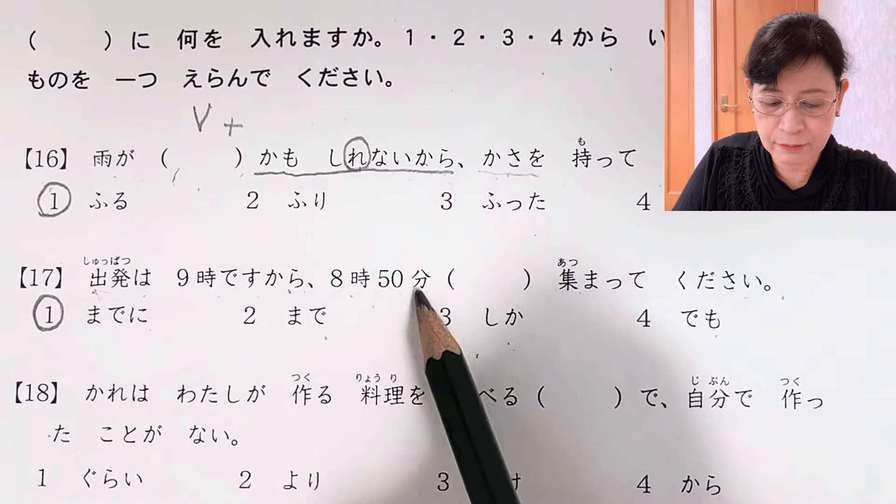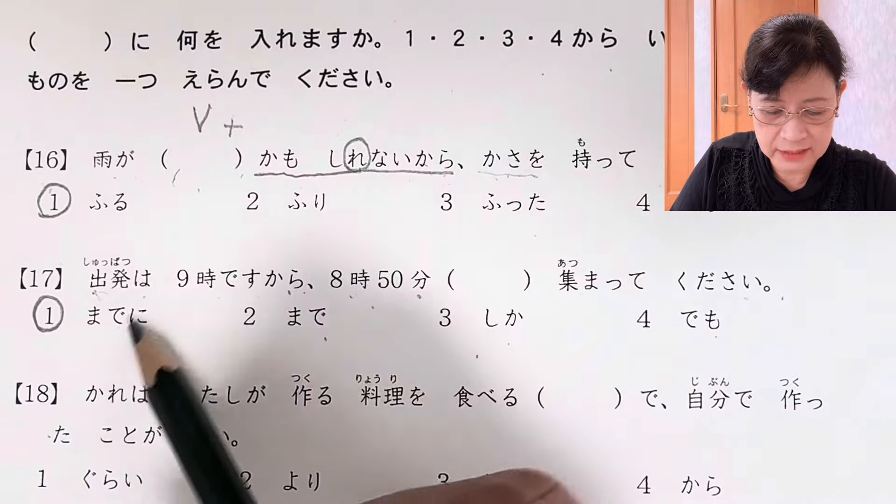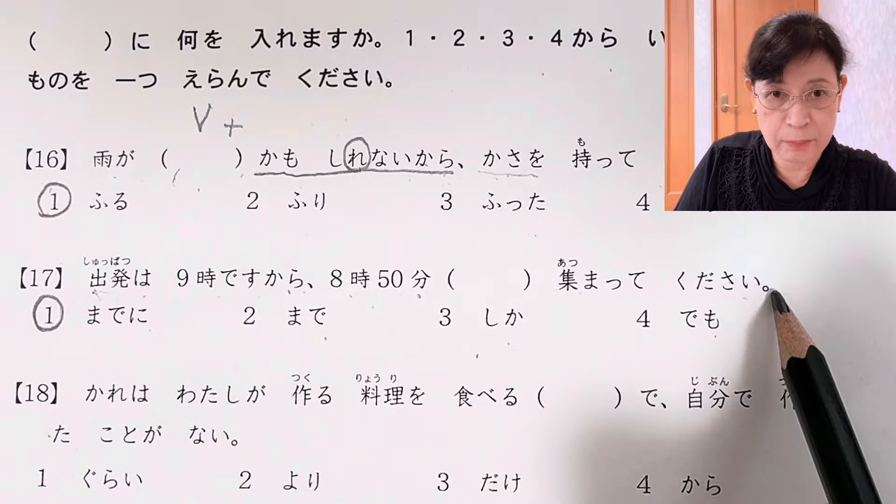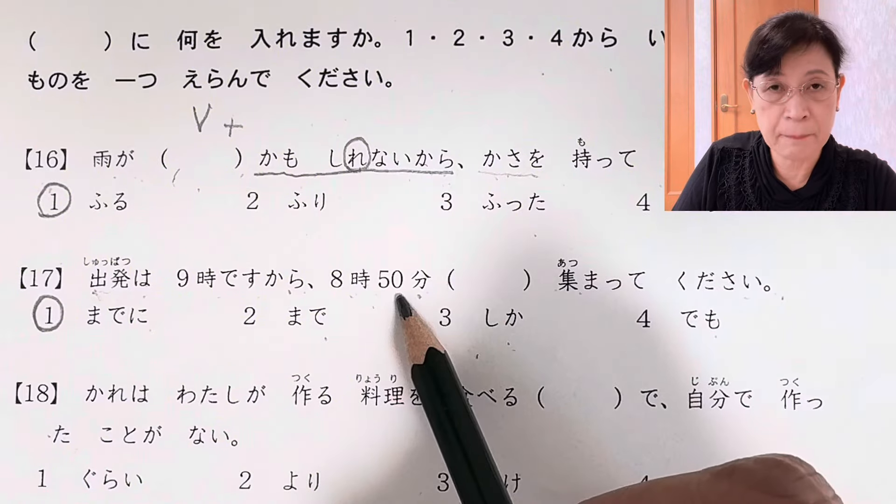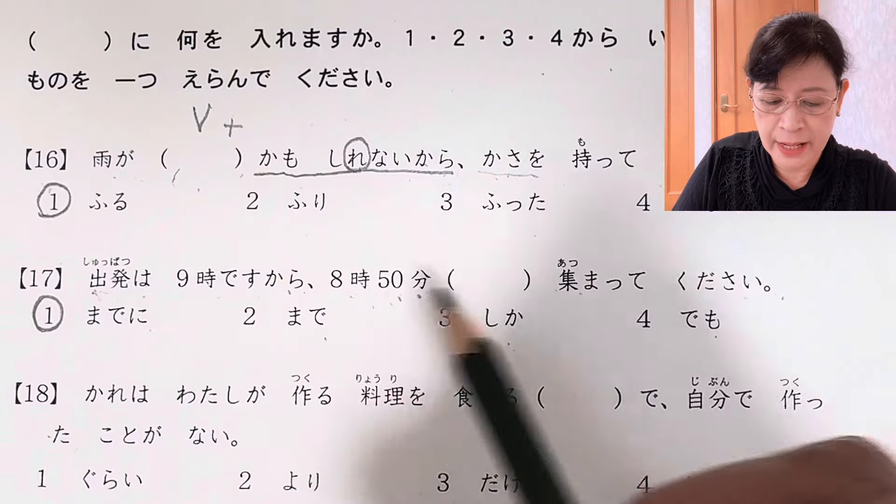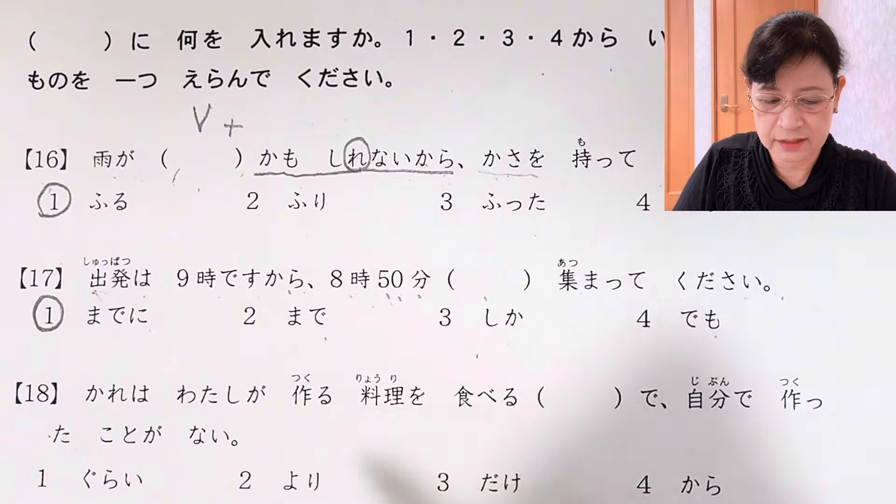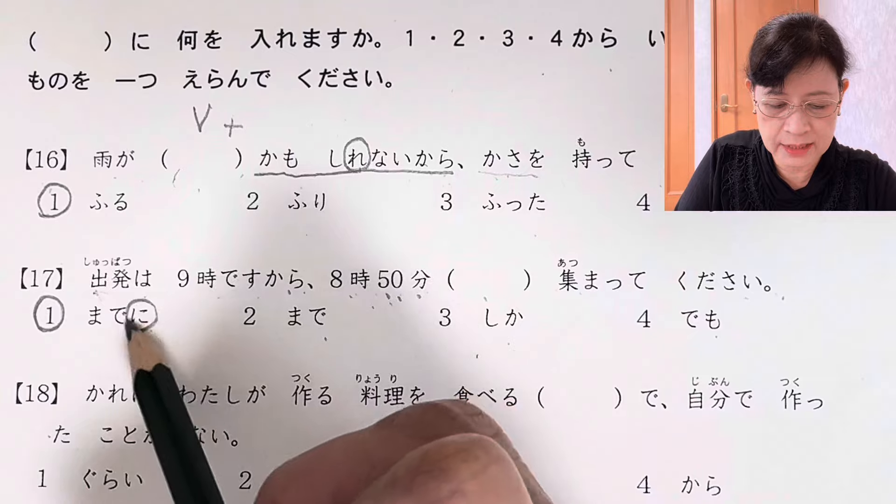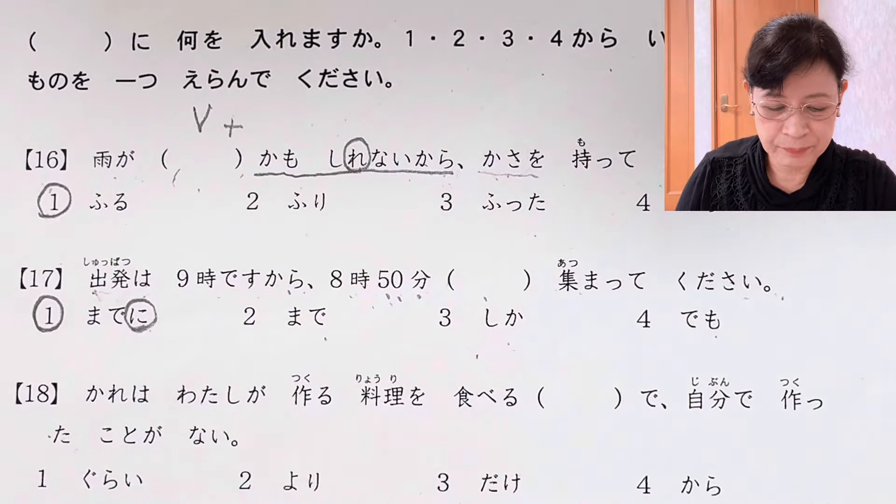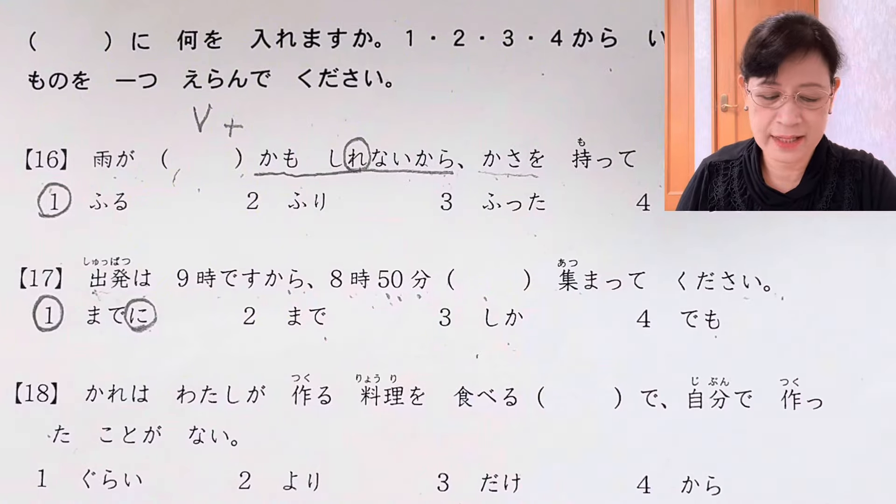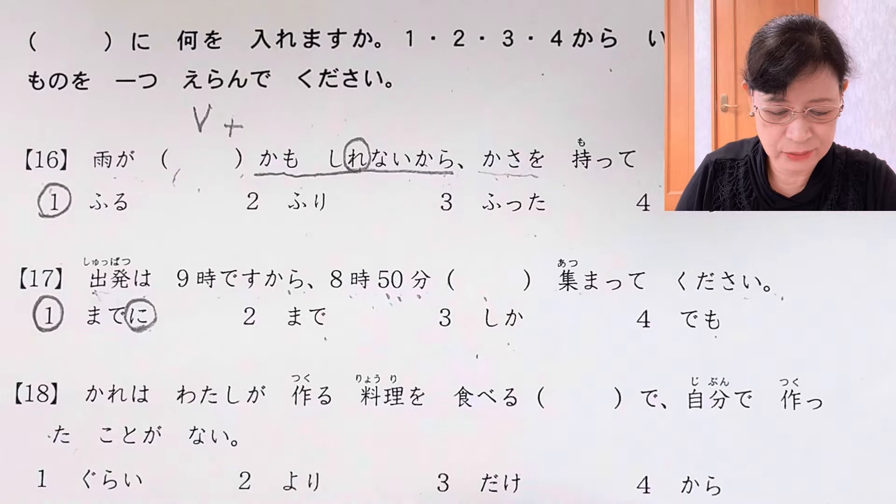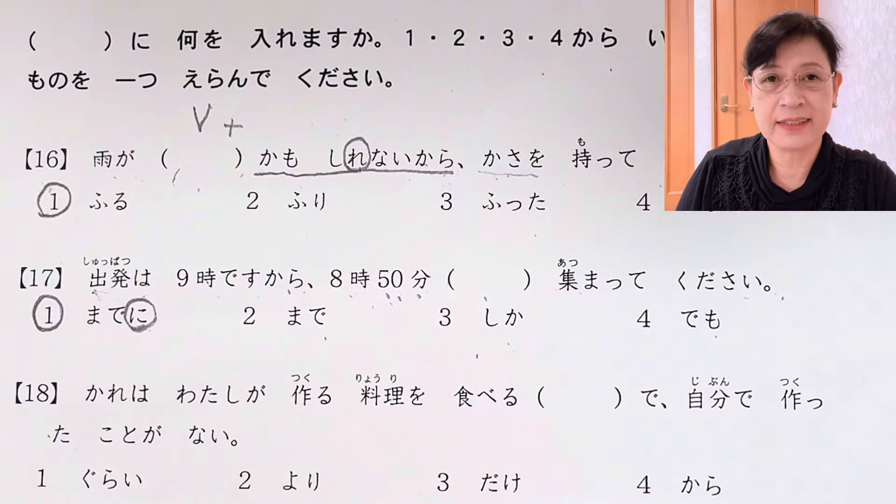までに. Our departure is at 9 o'clock, so at 8:50 までに集まってください - gather or be here at 8:50. までに sets a limit. You should be here by 8:50. When we use まで with に, it sets a limit. You should go by this time, so if you come late, well, sorry for you, we will leave you there.